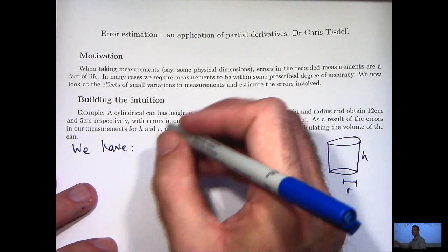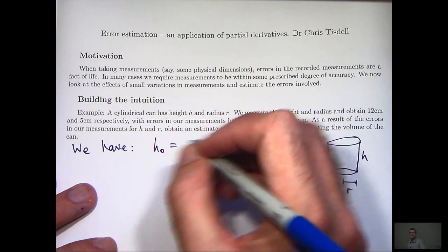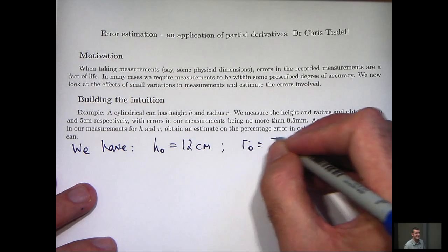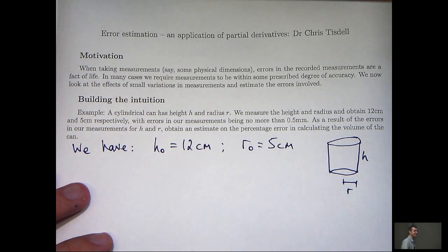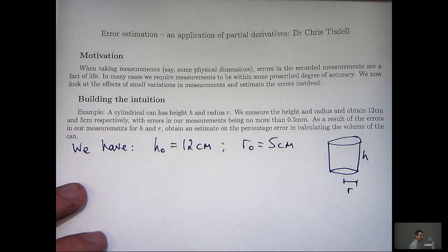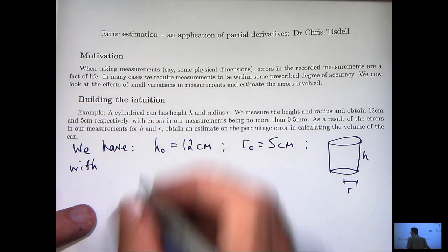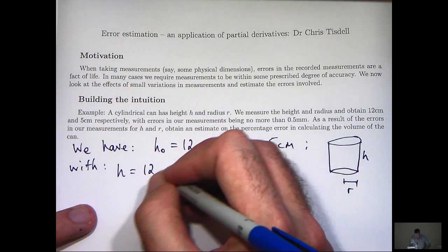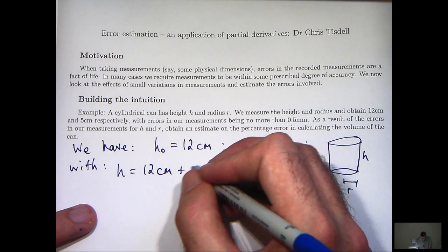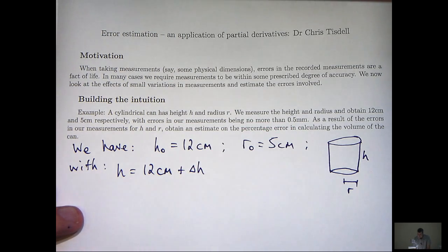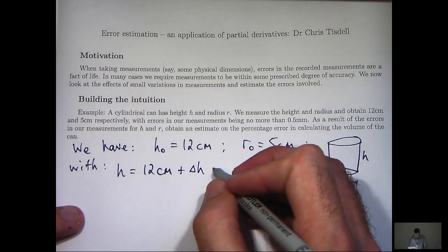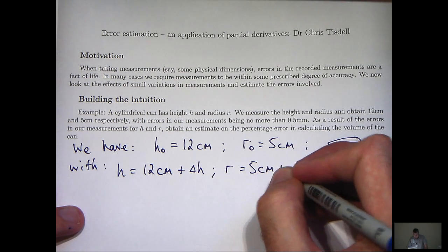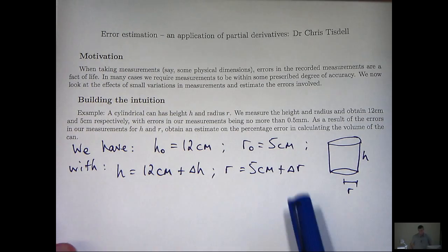I'm going to let R be the true radius of the base and H be the true, the actual height of the can. Let's see how we can solve this problem. Well, what do we know? H0 is going to be our recorded measurement for the height. R0 is our recorded measurement for the radius. Because we may have some errors involved, the true height is our measurement, 12cm, plus some error. This could be negative, it could be positive. We don't exactly know what this is. And the same for the radius, that has a small error too.